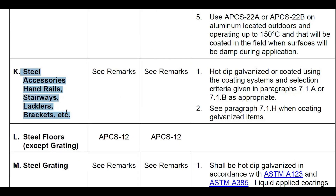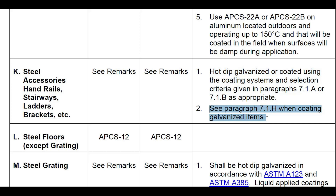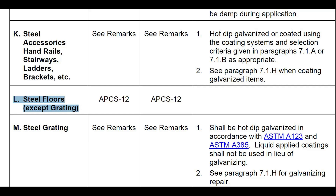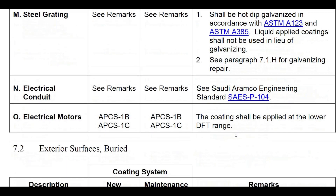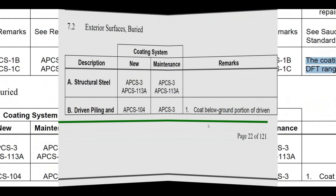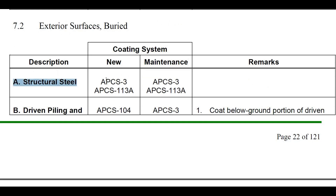For steel accessories such as handrails, stairways, ladders, and brackets, these shall be hot-dip galvanized or coated using the systems and selection criteria in paragraph 7.1a or 7.1b as appropriate. For steel floors, APCS12 can be used for new construction and maintenance. Steel grating shall be hot-dip galvanized in accordance with ASTM A123 and A385; liquid-applied coatings shall not be used in lieu of galvanizing. For electrical conduit, refer to Saudi Aramco engineering standard SAS-P104. Electrical motors shall use APCS1B and 1C for new construction and maintenance, applied at the lower DFT range. For buried structural steel, new construction and maintenance coating systems include APCS3 and APCS113A.